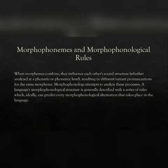A language's morphophonological structure is generally described with a series of rules which ideally can predict every morphophonological alternation that takes place in the language.